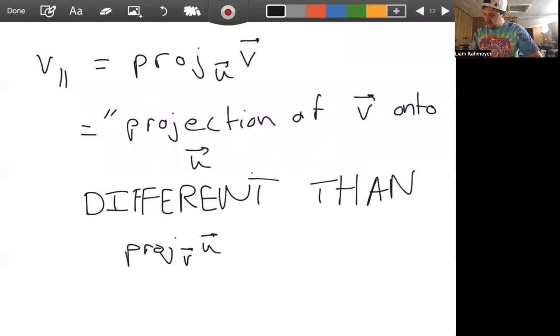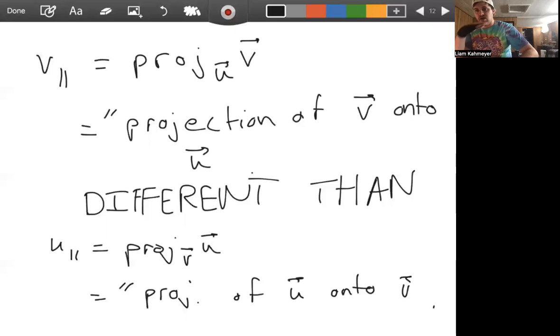This is inherently different—let me put this in all caps—so different than the projection of U onto V. This would be like U parallel, and this would be the projection of U onto V. And so you need to pay attention to the subscript and what's just in the normal line of text here.